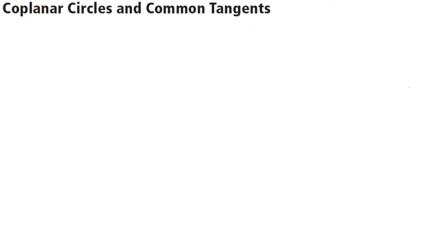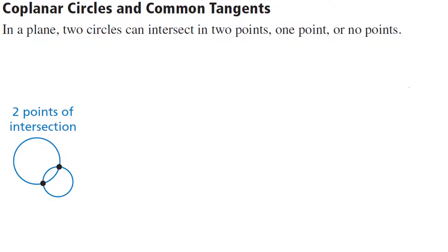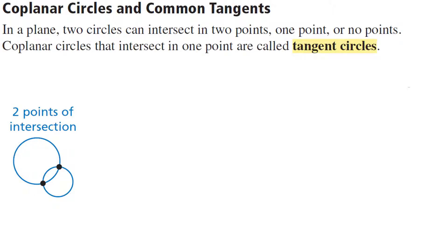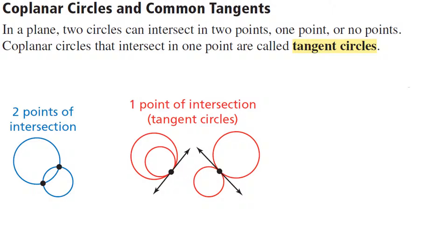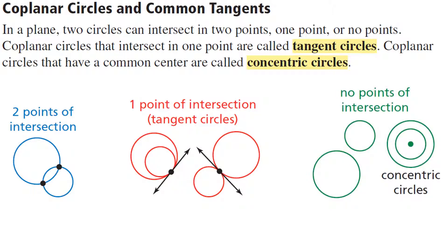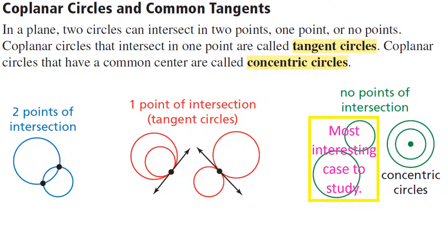The word coplanar reminds us that it's all in the same plane — we're two-dimensional, just length and width. Here's what's interesting: if you have two circles, they could intersect in two points, or they could intersect in just one point — and if it's exactly one point, those are tangent circles. What I find most interesting is the situation where there's no points of intersection but the circles are not concentric — two circles that are not concentric and have no points of intersection.